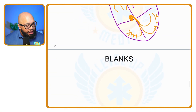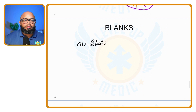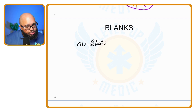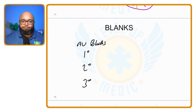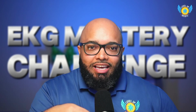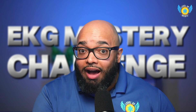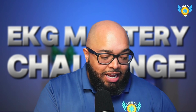When it comes to AV blocks, we have four main types. We have first degree, second degree, and third degree. Whenever you're naming an AV block, you need to start with its degree — that's like its first name.